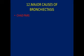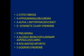The twelfth mnemonic is for major causes of bronchiectasis: CHAD-PARS. C for cystic fibrosis, H for hypogammaglobulinemia, A for alpha-1 antitrypsin deficiency, D for dyskinetic ciliary syndrome, P for pneumonia, A for allergic bronchopulmonary aspergillosis, R for rheumatoid arthritis, and S for Sjögren's syndrome.